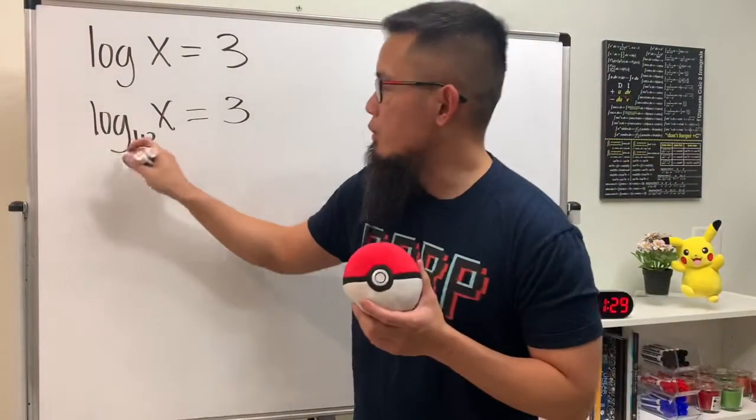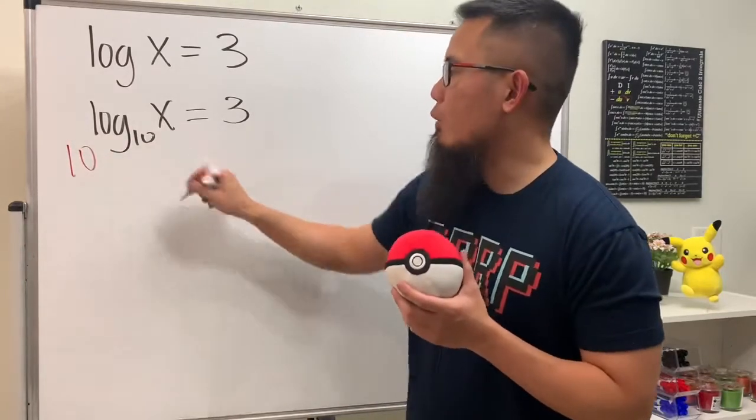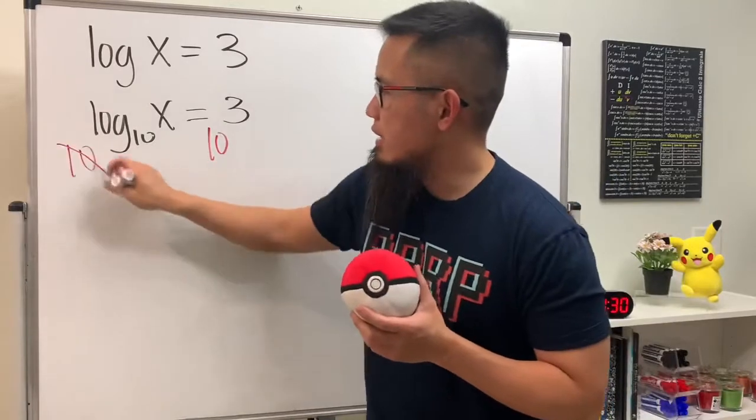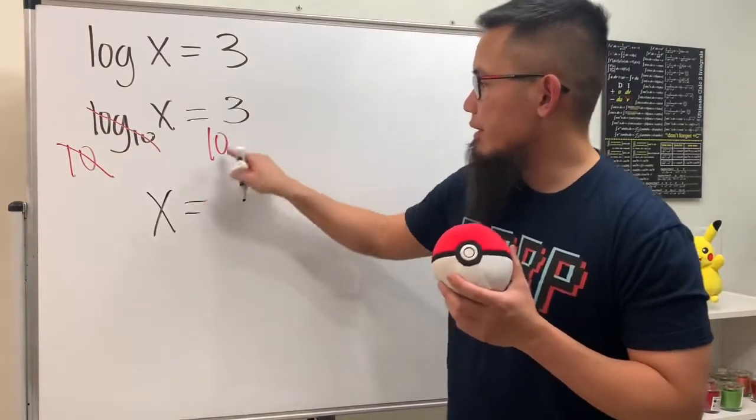We do 10 to this power and then 10 to that power. The base has to match, right? So as you can see, this and that can cancel and we just get x equals 10 for the base and then 3 for the exponent.